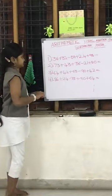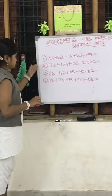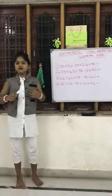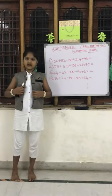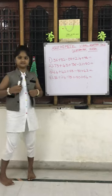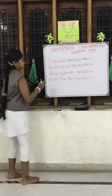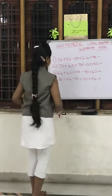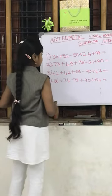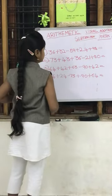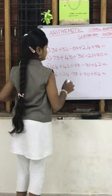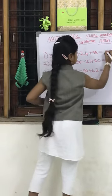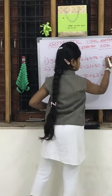Now, first let us solve some few questions. The first question is 36, 32 minus 59, 24, 98. So, we have to solve this. Answer is 131.